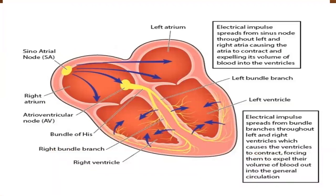In this illustration we see the SA node firing and blood emptying into the ventricles and out to the body. Your electrical impulse spreads from your SA node, which is our primary pacemaker for the heart. That causes the atria to contract and expel blood into the ventricle, then it moves down through your AV node and down through the bundle branches to the left and right ventricles, which causes the ventricles to contract and force blood out into general circulation.